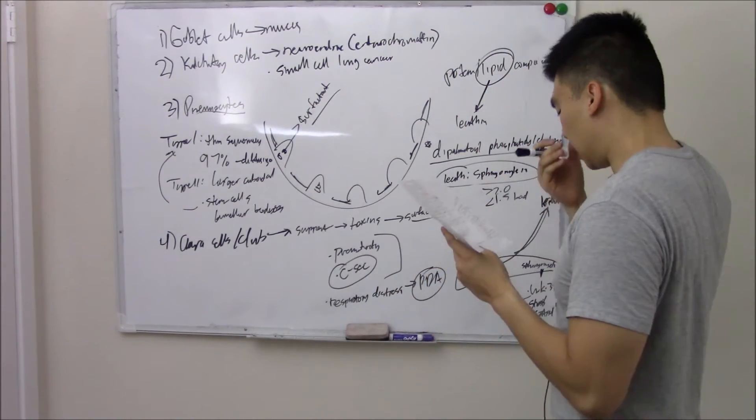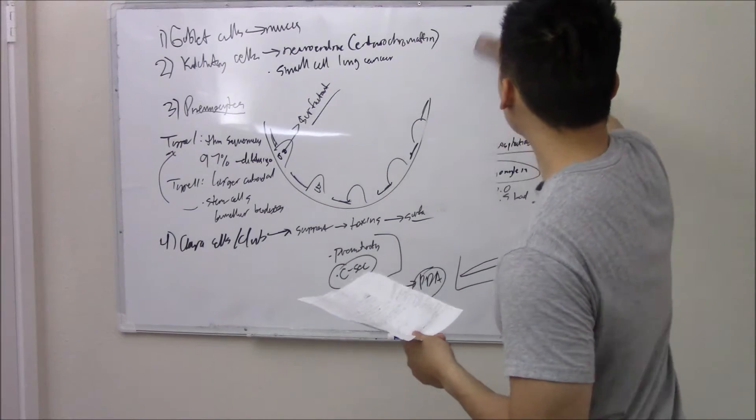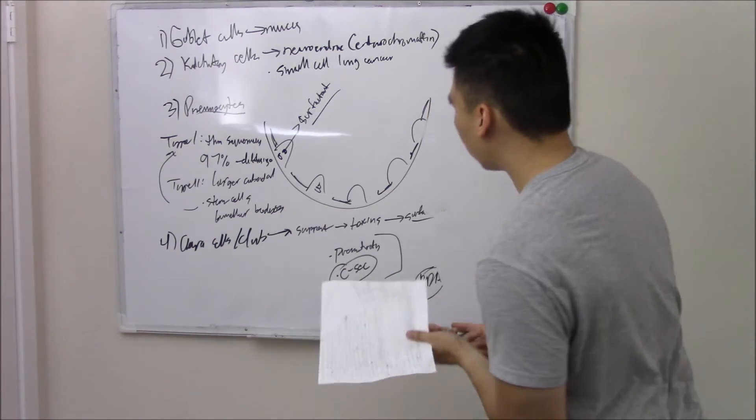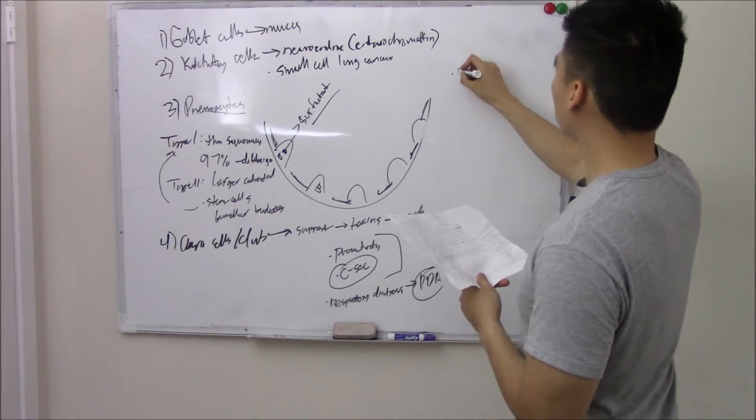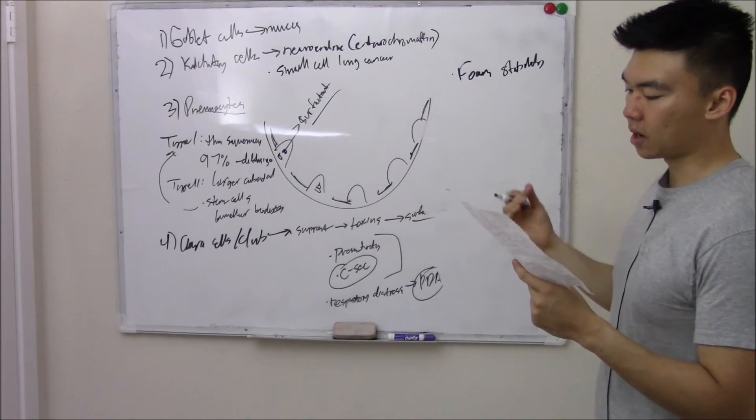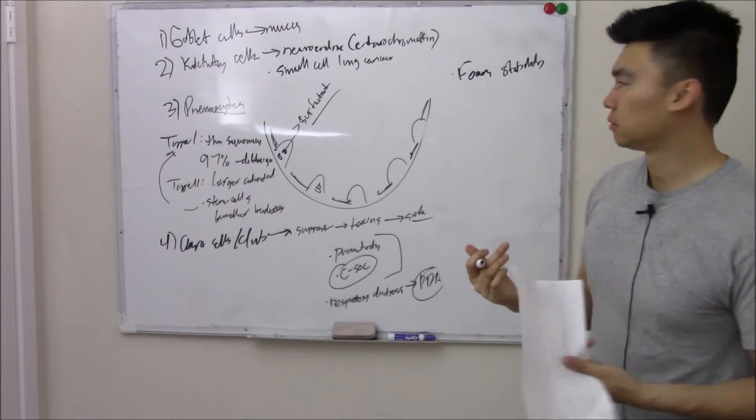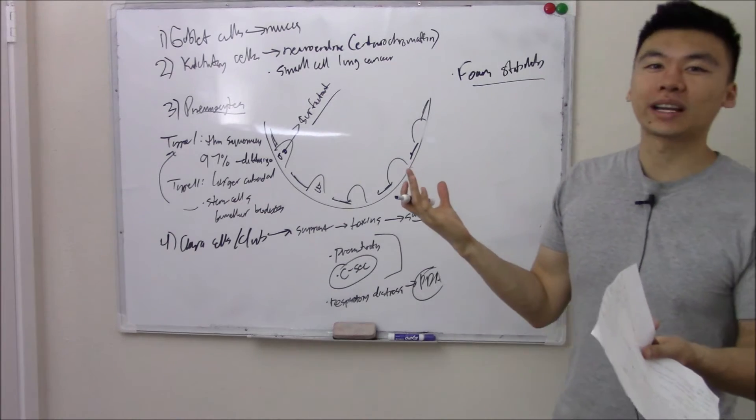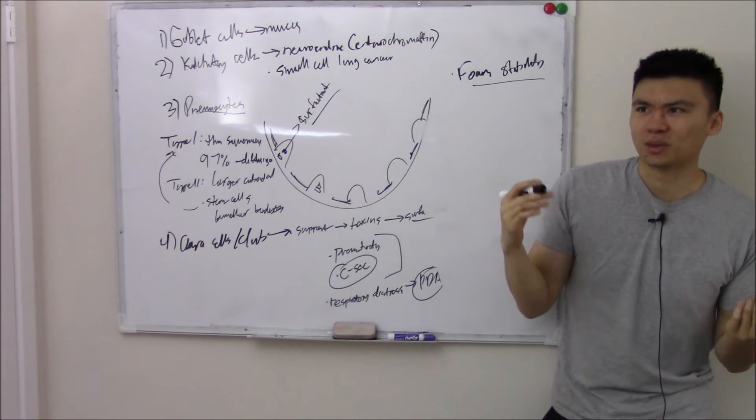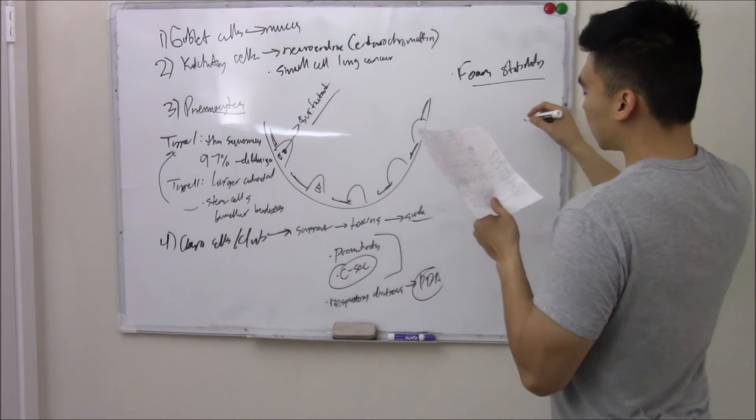Some more abstract ways they like to test: instead of using the lecithin-to-sphingomyelin ratio, they might say lecithin-to-albumin ratio, same thing. Instead of using that test they might say foam stability test. This is when you take amniotic fluid, add some ethanol, and shake it. If it makes foam, that's good, means there's a lot of surfactant. If it doesn't make foam, that's bad. I've seen questions where they're talking about surfactant and then they throw in foam stability testing.